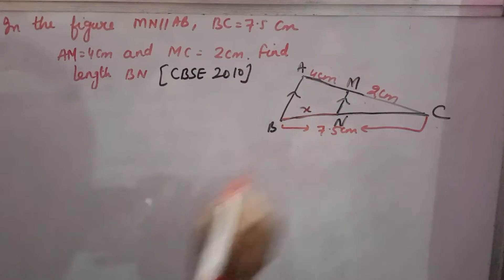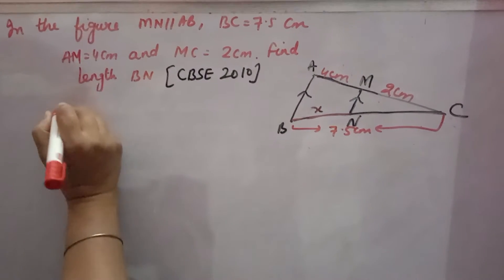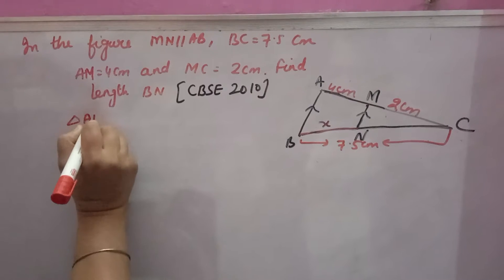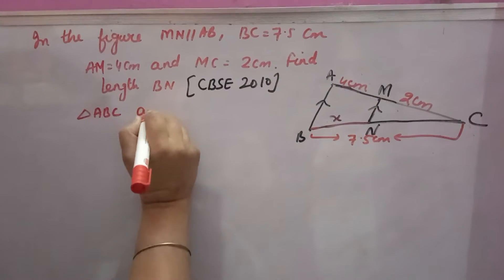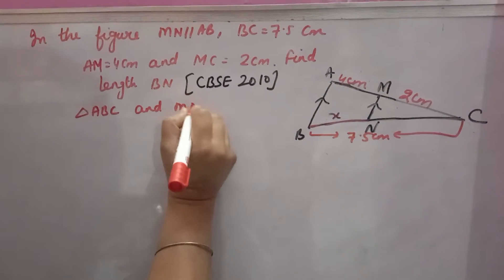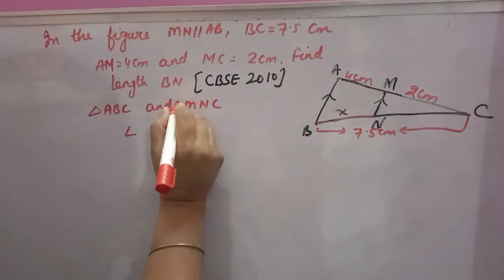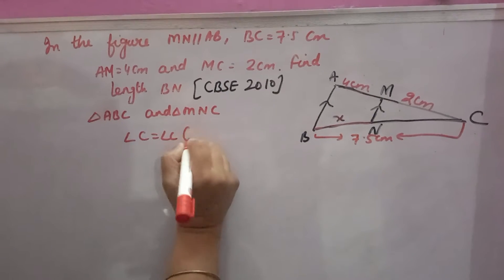Suppose BN is X. Now you see triangle ABC and triangle MNC. Angle C is equal to angle C. It is common in both.